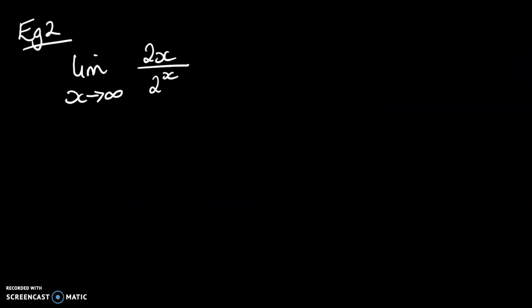Now our next example, we can't simplify it, but what we can do is consider what happens when x gets very big. So we've got this limit here where x is tending towards infinity. So just meaning if we go all the way to the right of our graph, what would happen?